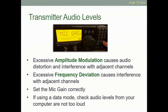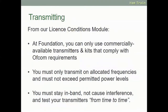Excessive amplitude modulation causes audio distortion and interference with adjacent channels. This can happen by shouting into the microphone or having your mic gain too loud. If you don't set your mic gain correctly, you will over-deviate on amplitude modulation and can also create excessive frequency deviation on FM mode. Make sure you set the mic gain correctly, and if you're using a data mode, check the audio levels from your computer are not too loud.